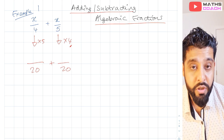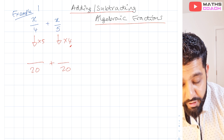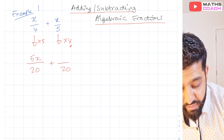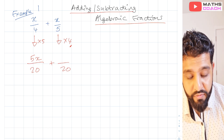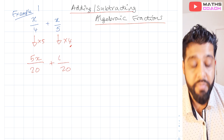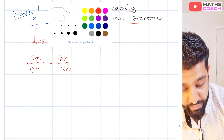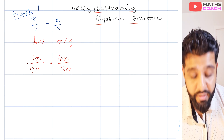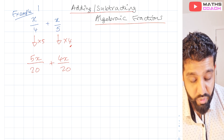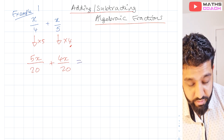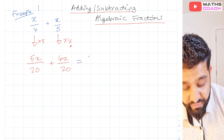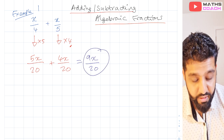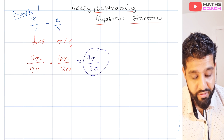Whatever you do to the bottom you must do to the top. For the first fraction we have x as the numerator, so we multiply by 5 giving us 5x. For the second fraction we also have x and we multiply by 4 giving us 4x. Now that both denominators are 20, we can just add the numerators: 5x plus 4x gives us 9x, and our answer is 9x over 20. Very simple, very straightforward.